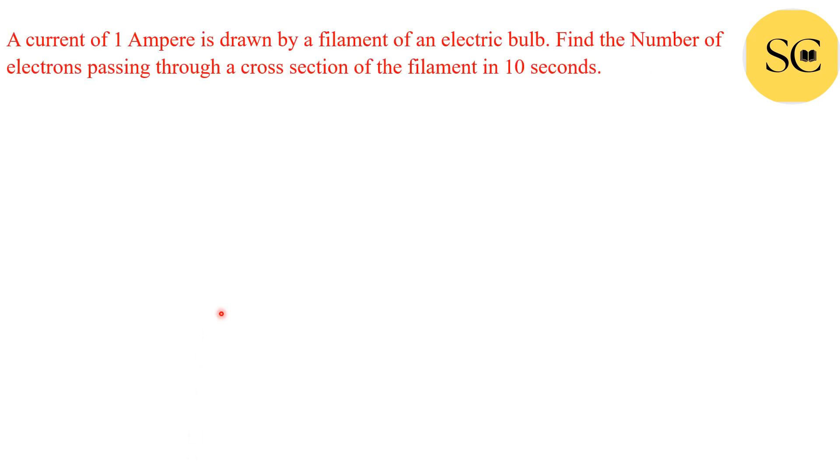Okay, now the last question: a current of 1 ampere is drawn by a filament of an electric bulb. Find the number of electrons passing through a cross section of the filament in 10 seconds. In this question we will have to find the number of electrons.